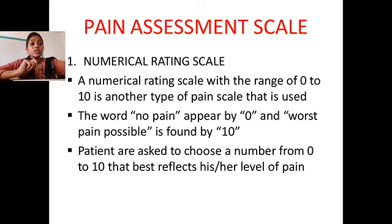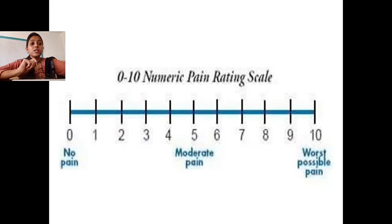The patient is asked to choose a number from 0 to 10 that best reflects their level of pain. On the scale: 0 means no pain, 5 means moderate pain, and 10 means worst possible pain. This is how we assess pain using the numerical pain rating scale.